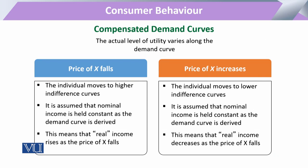Today we focus on the compensated demand curve. When the price of commodity X decreases, it gives the consumer an opportunity to move to a higher indifference curve, because the consumer now has some income left. This price decrease provides added purchasing power. We assume that nominal income is held constant — whatever budget the consumer had, we do not change it.